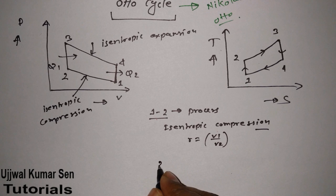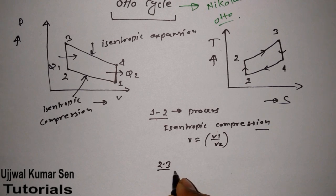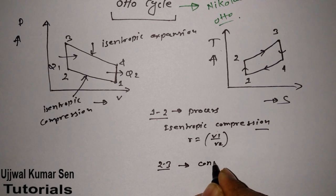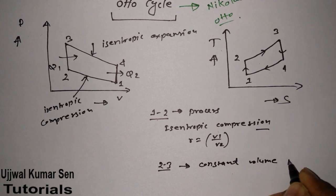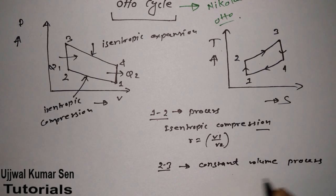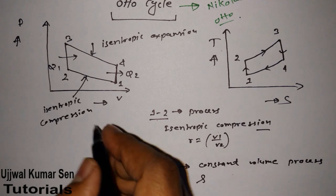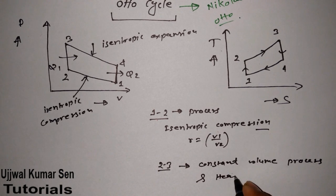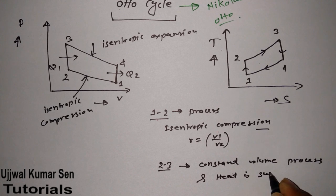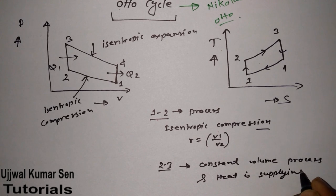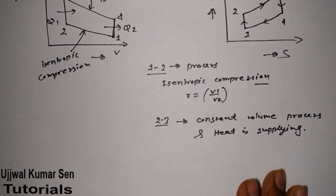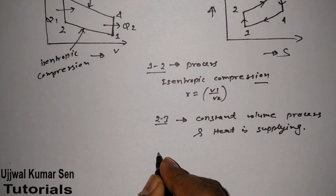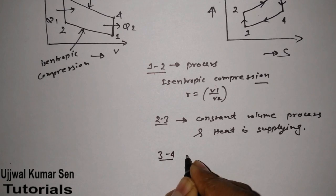For the next process, 2 to 3, this is a constant volume process. The second thing happening here is that heat is being supplied during this process.